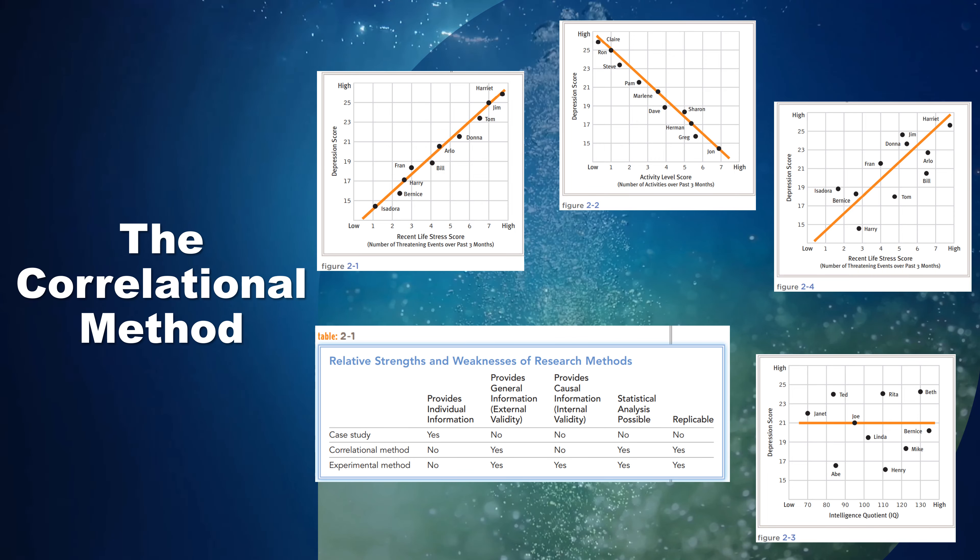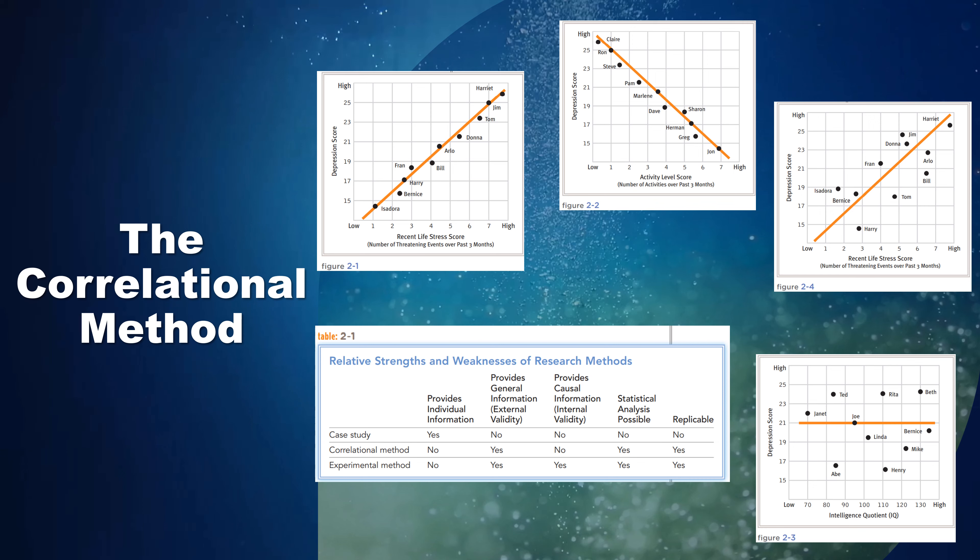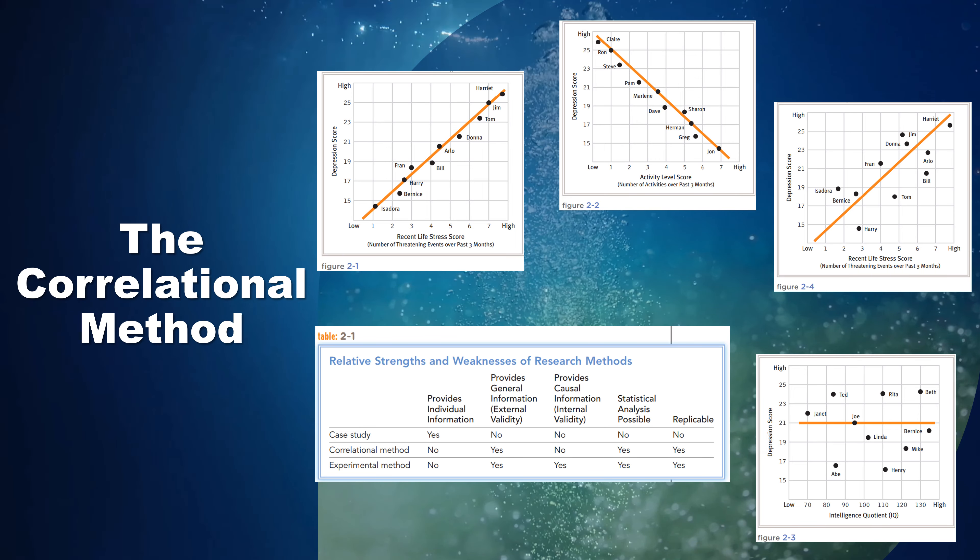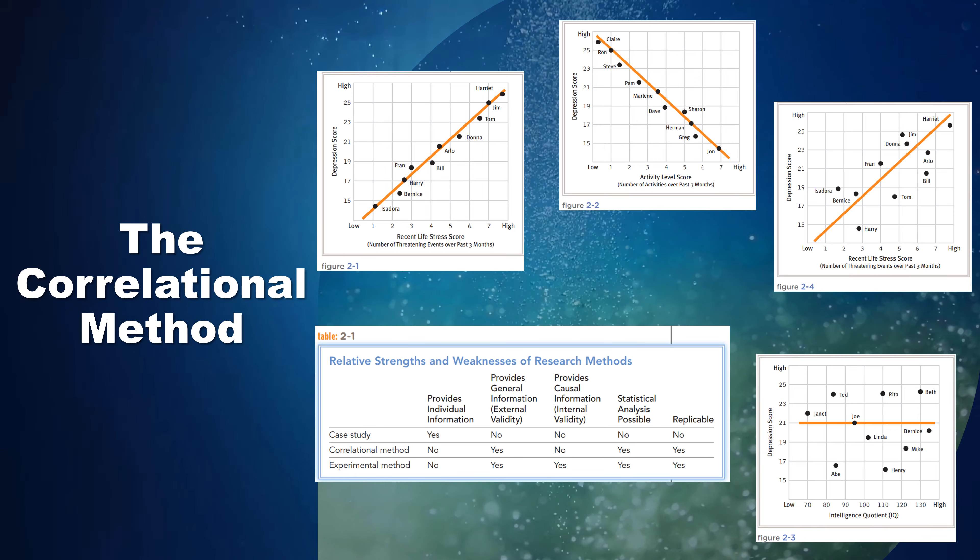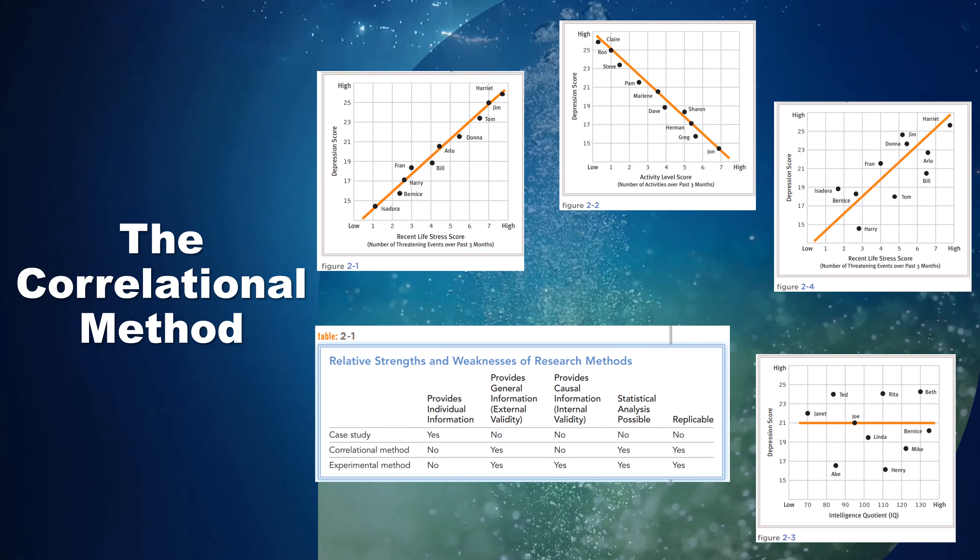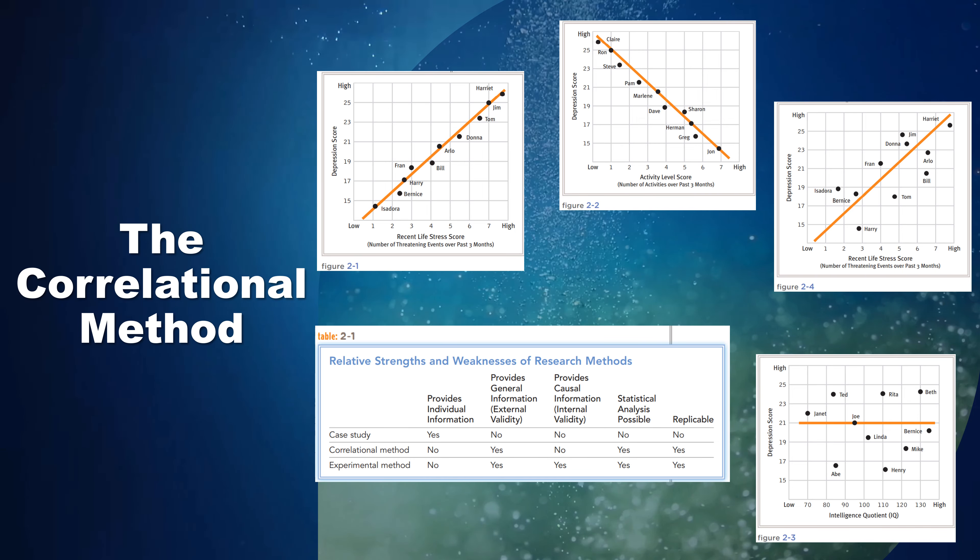No correlation: the relationship between intelligence and feelings of depression shown by this hypothetical sample is a near-zero correlation. Magnitude of correlation: the relationship between amount of recent stress and feelings of depression shown by this hypothetical sample is a moderately positive correlation. The direction and magnitude of a correlation are often calculated numerically and expressed by a statistical term called the correlation coefficient, symbolized by the letter R.